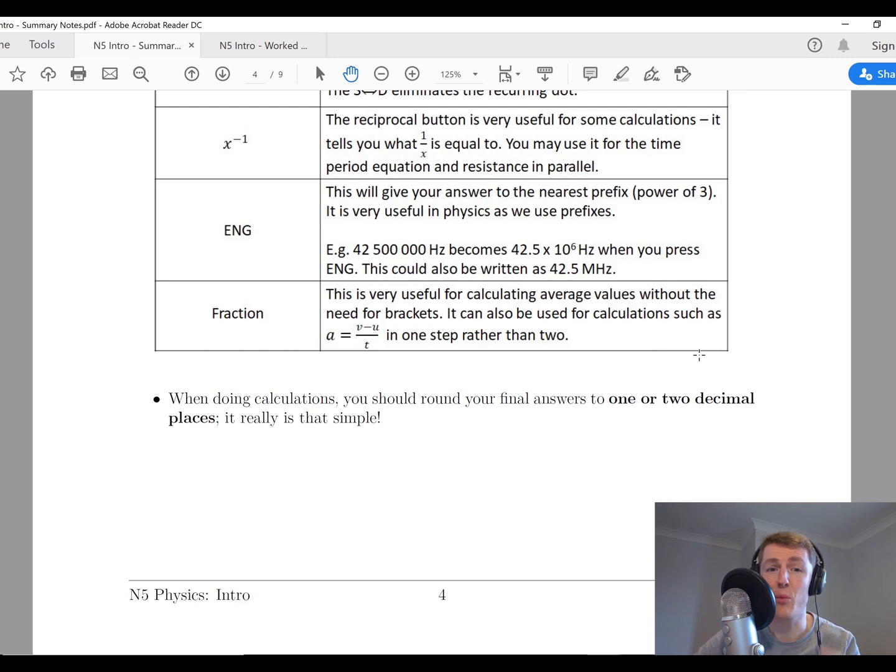The last thing to mention here guys is that when you're doing calculations, you really should round your final answers to one or two decimal places. That's all it takes. We're not looking for you to write all the numbers down that appear in your calculator, because that just doesn't help anyone. We really just want you to round your answers to one or two decimal places. So keep that in mind every time you're writing down a final answer.